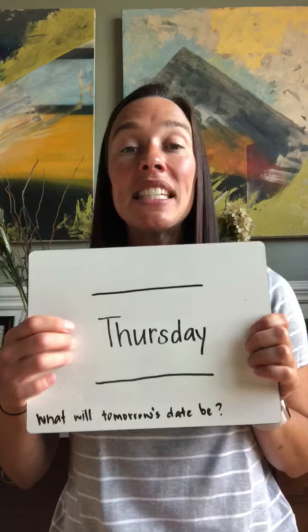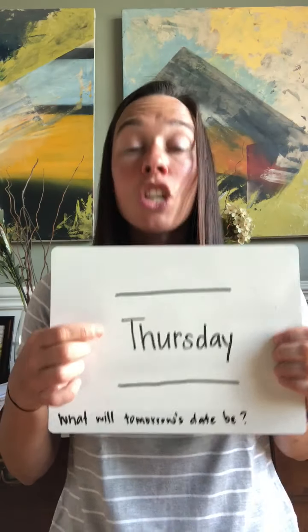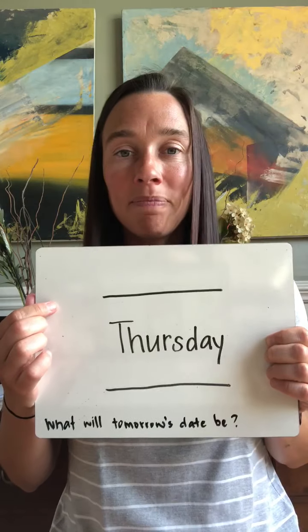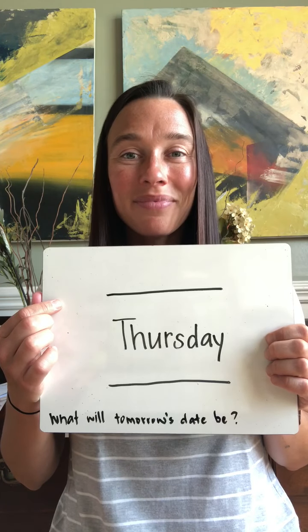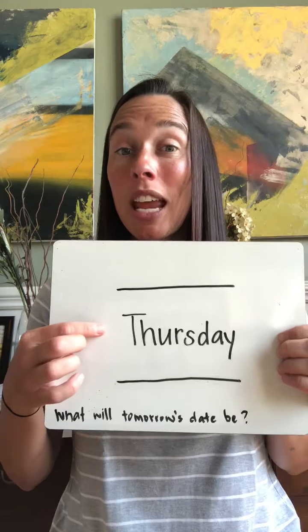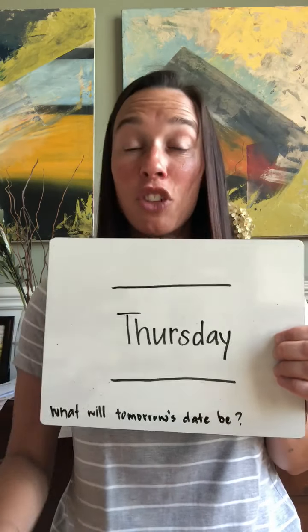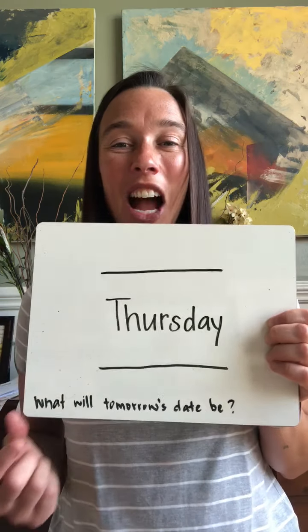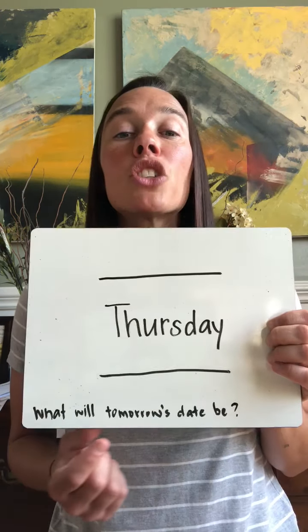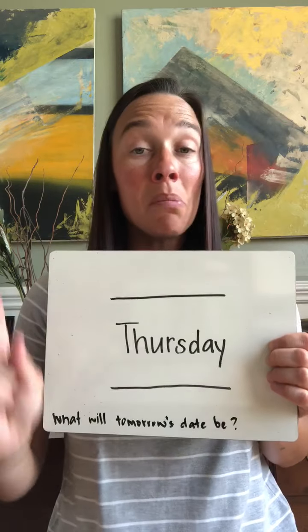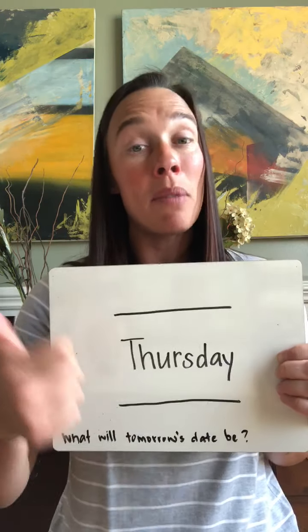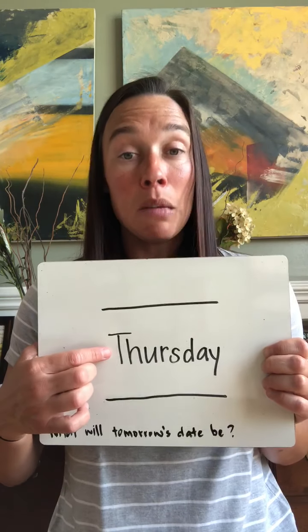All right, let's take a look. We said today is Thursday. I want you to think: if today is Thursday, what was yesterday — what was the day before today? And if today is Thursday, what will tomorrow be — what's the day after today? Good job. Now what will tomorrow's date be? Remember, the date also has to have a month and a day with it.